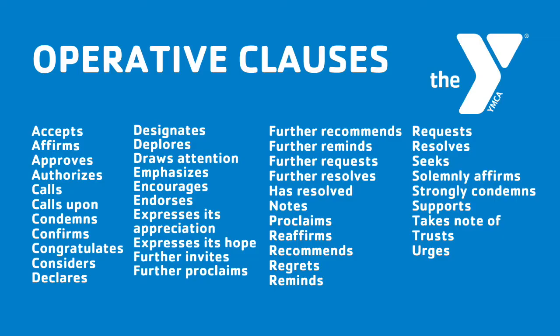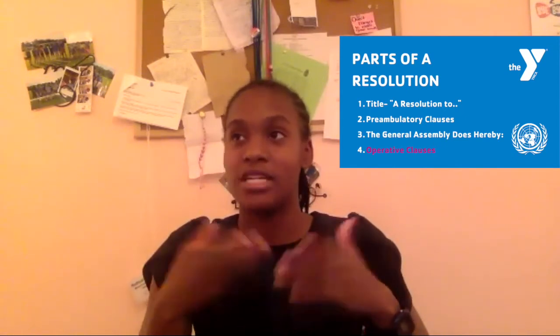You also want to consider format. Operative clauses are numbered, and each clause ends in a semicolon except the last one, which ends in a period, beginning with 'The General Assembly hereby.' After that, make sure your solution stays in character with your country, doesn't infringe on a nation's sovereignty, and stays within the power of the UN. You can't ask the UN to eliminate your country's government because that's not something they can do. Remember to stay true to what the UN can actually do.